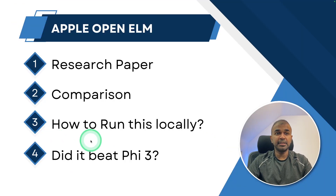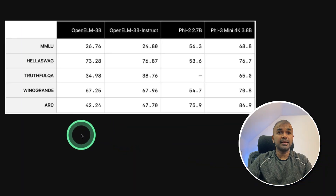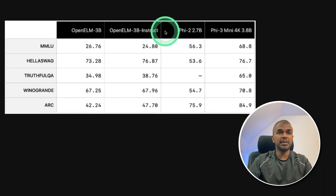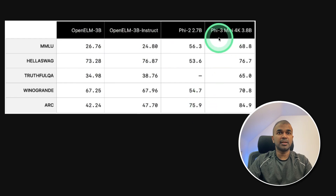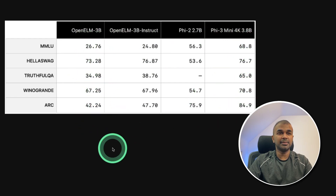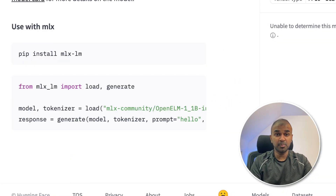Lastly, did it beat Phi-3, the model by Microsoft? Here is the comparison: OpenELM-3B and OpenELM-3B-Instruct versus Phi-3.2 and Phi-3.3. We can see that Phi-3.3 outperforms OpenELM. I'm going to create more videos similar to this, so stay tuned.